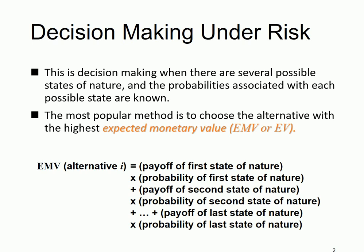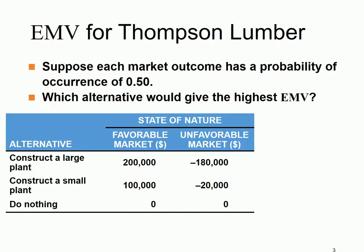As you can see from this definition, it's essentially the same as EV. Going forward, we're going to call it EMV, or sometimes just EV. Now let's look at an example: the Thompson Lumber Company again. Suppose that each market outcome has a probability of occurrence of 0.5. Then which alternative will give the highest EMV?